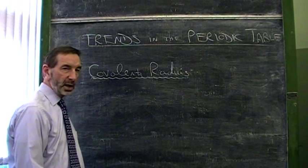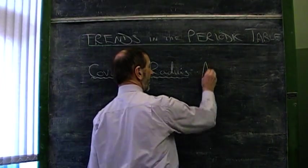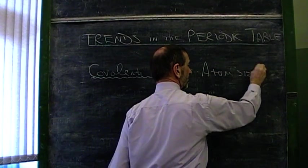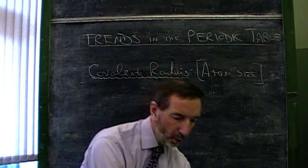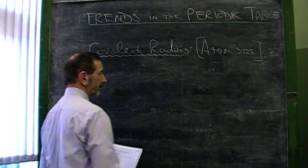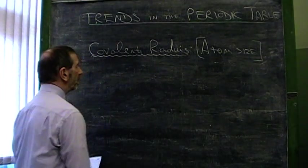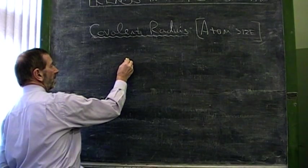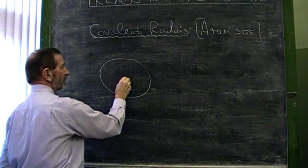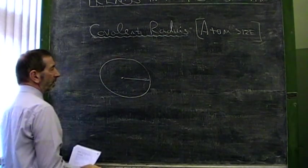Let's take Covalent Radius, which is more simply expressed as Atom Size. To all intents and purposes, it's the same thing. Now, what is a trend in atom size, and what do we mean by Covalent Radius? Well, Covalent Radius, as it implies, is the radius, which is half the diameter of an atom.